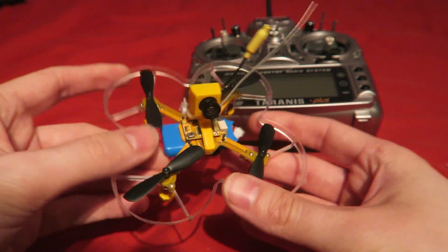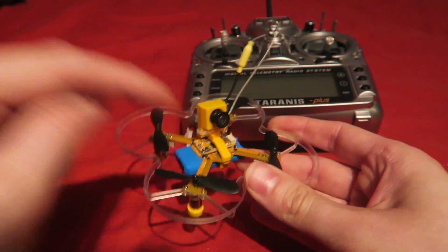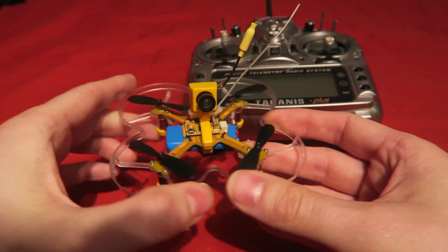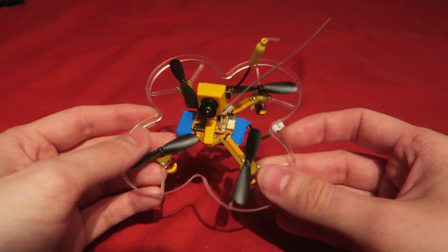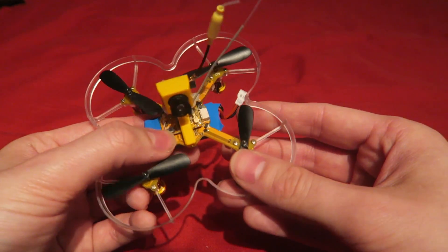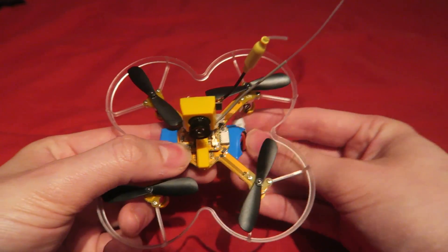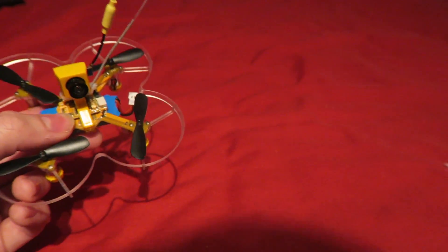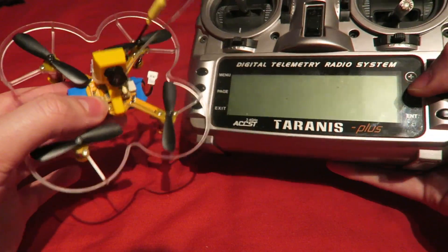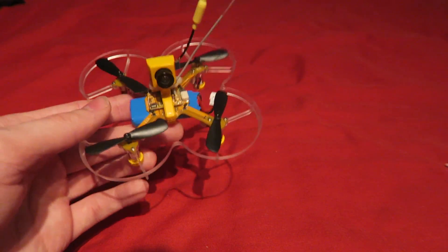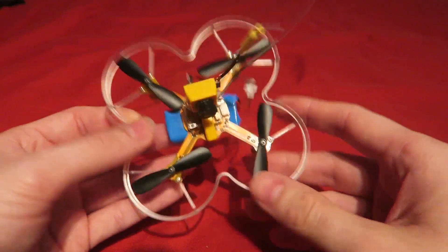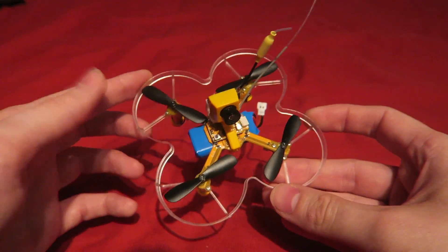So I think they need to include this to get people's attention. So the way that you bind this is you hold down this bind button here and plug in the battery and then in D8 mode on the Taranis you press the bind button and then it should be bound. You can reset everything and go and take it for a fly and that's what I'm going to do now.